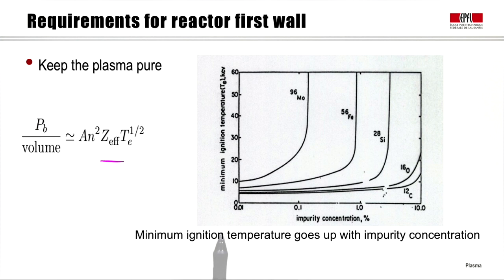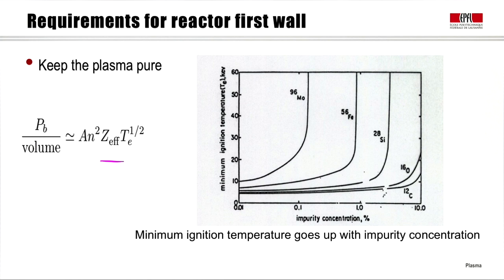The Bremsstrahlung radiation depends on the charge and atomic number of the impurity. Looking at the curve showing the minimum ignition temperature as a function of impurity concentration — calculated using Bremsstrahlung as a loss channel, which is an optimistic view — the impurity concentration makes that minimum temperature go up. Even more importantly, that curve changes dramatically as you go from low-Z impurities like carbon to high-Z such as iron and molybdenum. So we have to avoid injection of high-Z impurities into the core.